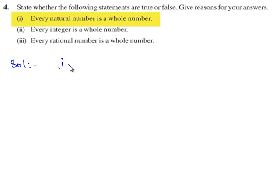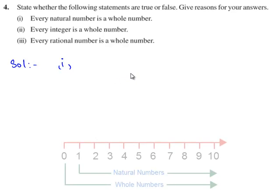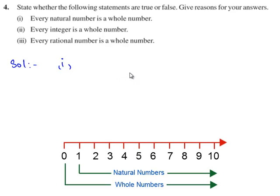The first statement is: every natural number is a whole number. The statement is true because the set of natural numbers starts with 1 and the set of whole numbers starts with 0. Hence, the natural number set is included in the whole number set. Therefore, every natural number is a whole number, and the first statement is true.